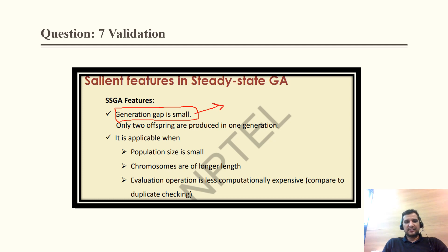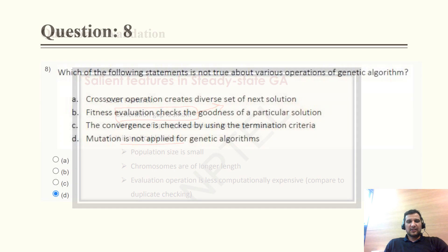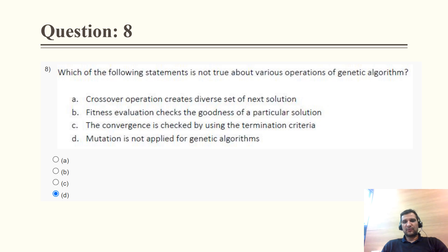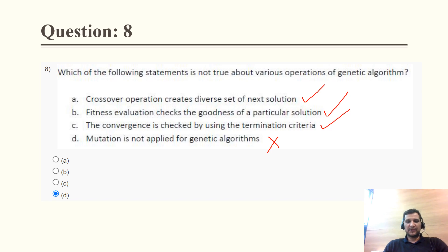Question 8: Which of the following statements is not true about various operations of genetic algorithm? Crossover operation creates a diverse set — correct. Fitness evaluation checks the goodness of a particular solution — correct. Convergence is checked by using termination criteria — correct. However, 'mutation is not applied for genetic algorithm' is a false statement, because mutation is indeed applied to genetic algorithm. So the correct option is D.